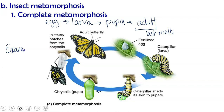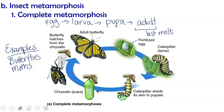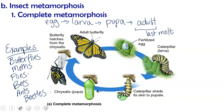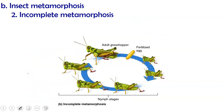Butterflies and moths are the most familiar, but flies, bees, ants, and beetles also undergo complete metamorphosis. Beetle larvae are called grubs and fly larvae are called maggots.